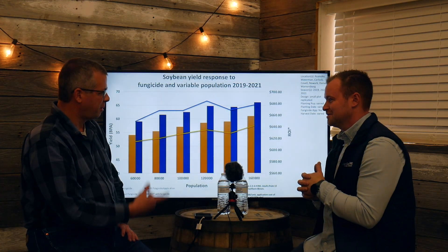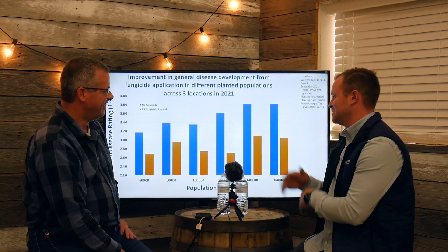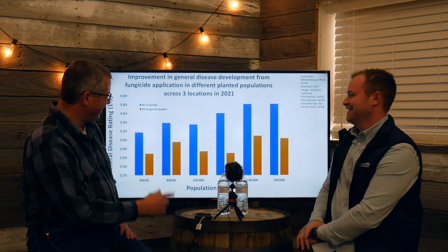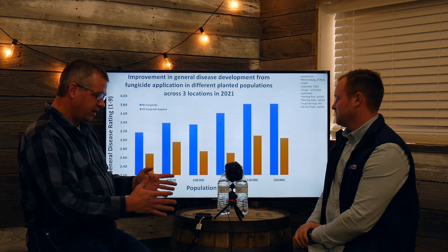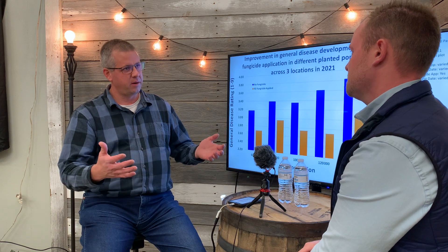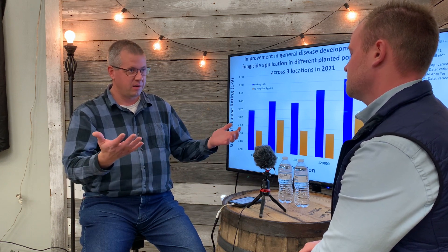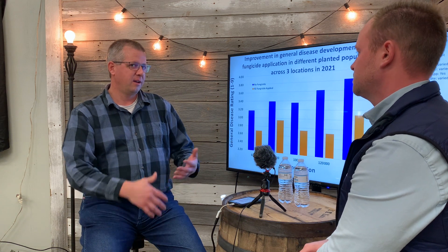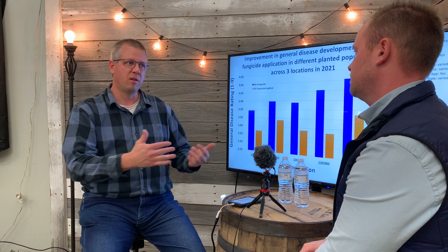At these locations, did you get a chance to go out in the field and look at the level of disease pressure in these trials? The last couple years we started looking not just at yield but really trying to understand how different populations affect disease. Common agronomic advice might be that at a lower population you should have a little bit less disease development.